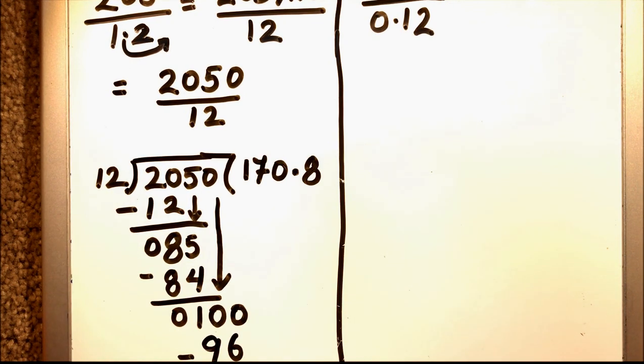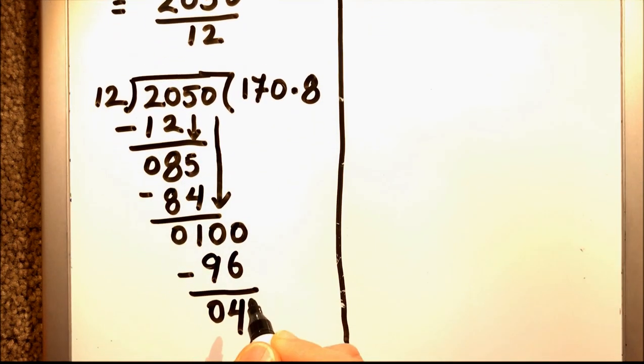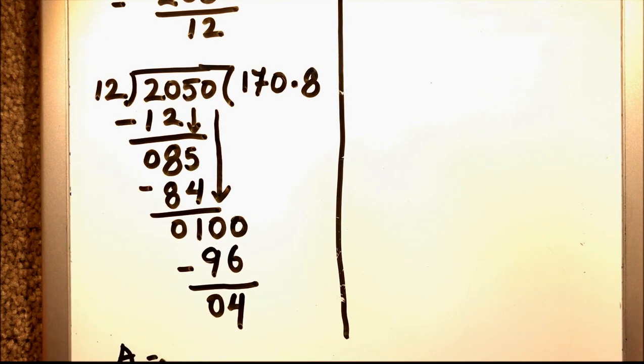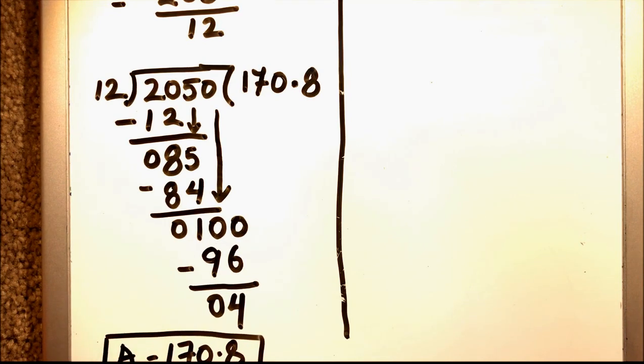So we'll put a 0 by adding a decimal point and then we'll count the tables of 12, which is 12 times 8 is 96, and we'll get 4 as a remainder. So our answer will be 170.8. In this way we can divide two numbers when the divisor is a decimal number.